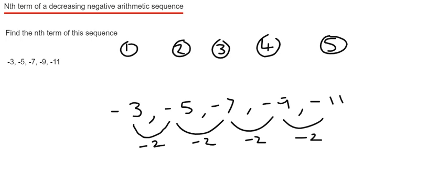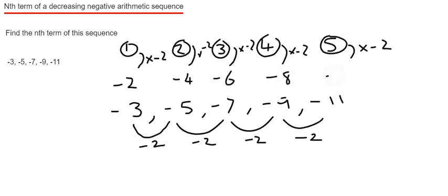Now this tells me that the nth term has something to do with the minus 2 times tables. When you times all the numbers at the top by minus 2, in other words, we just need to write down our first five multiples of minus 2. So these are minus 2, minus 4, minus 6, minus 8, and minus 10.